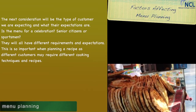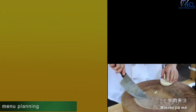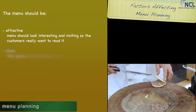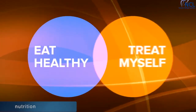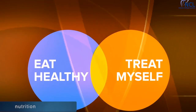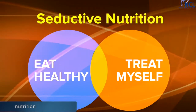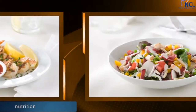This is so important when planning a recipe, as different customers may require different cooking techniques and recipes. When planning a menu you should aim for it to be attractive, clean and easy to read — making favourite dishes just a little bit healthier while keeping them just as delicious. Research shows that when people eat out they want to eat healthier but also want to treat themselves. The opportunity is to find the sweet spot between great taste and good health — this is what we call seductive nutrition.